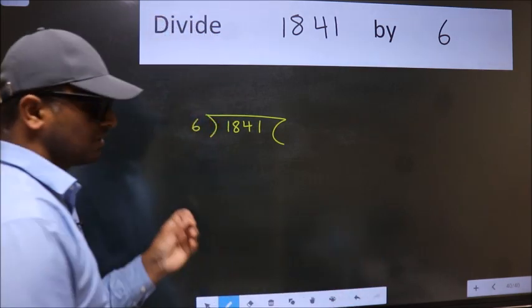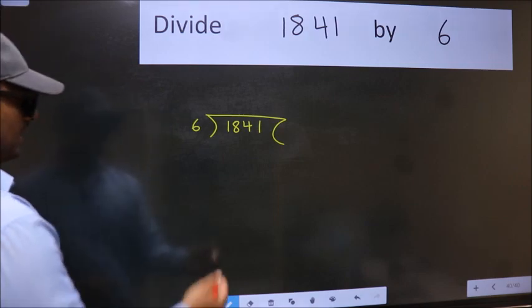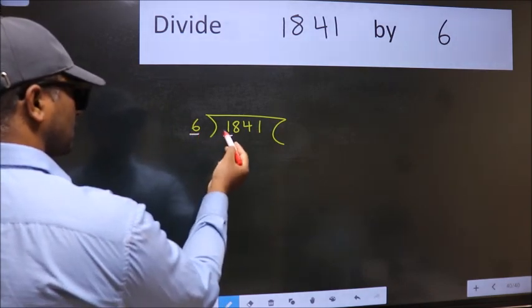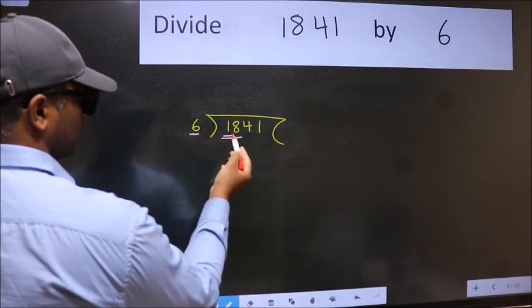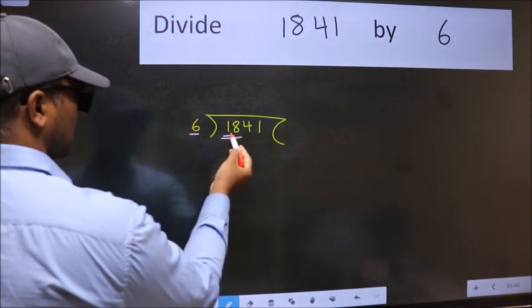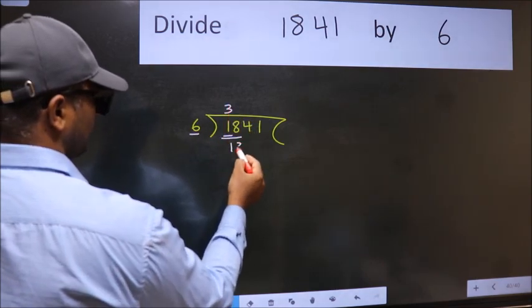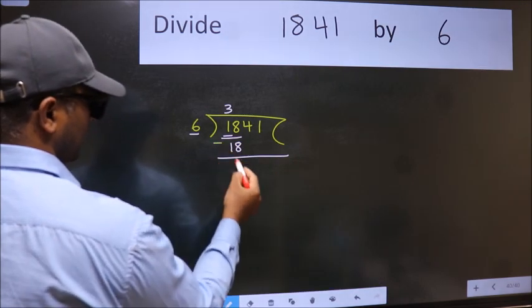This is your step 1. Next. Here we have 1 and here 6. 1 is smaller than 6. So we should take two numbers, 18. When do we get 18 in 6 table? 6 threes 18. Now we should subtract. We get 0.